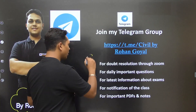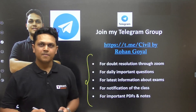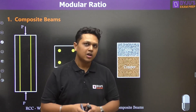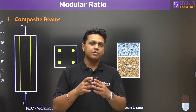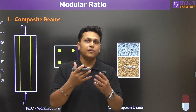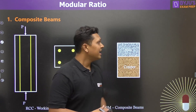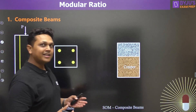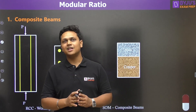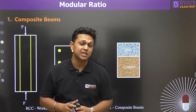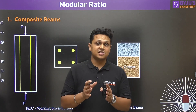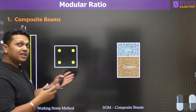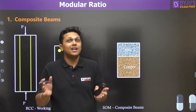Let us start with today's session. Modular ratio is required whenever you need to analyze the effect of bending or any axial load in a composite material. For example, in RCC, the working stress method is also referred to as the modular ratio method because it is based on modular ratio itself.